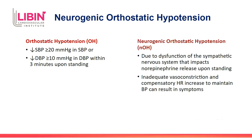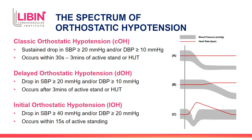We often talk about neurogenic orthostatic hypotension. To be clear, that's not different than orthostatic hypotension — it's a subset of it. When we say neurogenic orthostatic hypotension, we're saying yes, the blood pressure drop is there, but specifically it's due to a problem with the sympathetic nervous system. There's an inadequate release of norepinephrine on standing that leads to an inability to vasoconstrict adequately and to increase heart rate adequately to maintain blood pressure on standing. This is the orthostatic hypotension that most of us talk about and think about.